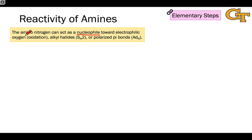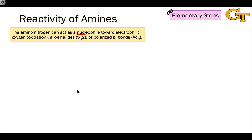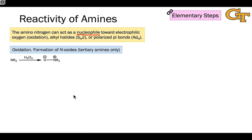The amino nitrogen can act as a nucleophile toward electrophilic oxygen in oxidation processes, like we saw with thiols and thioethers, toward alkyl halides in SN2 reactions, or toward polarized pi bonds in addition processes. This general reactivity sums up a lot of what amines can do.